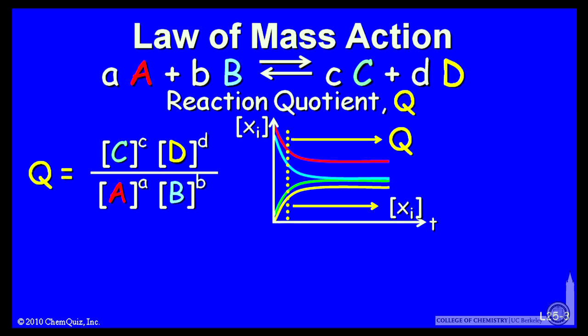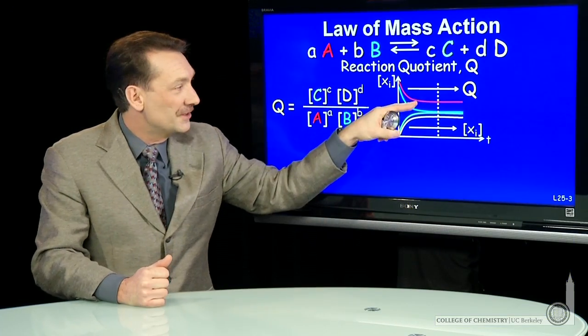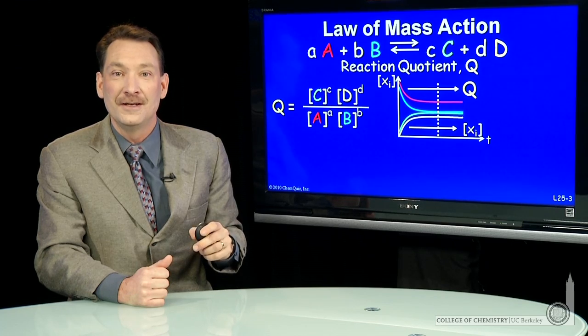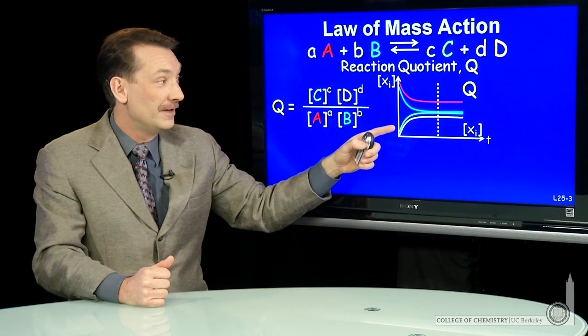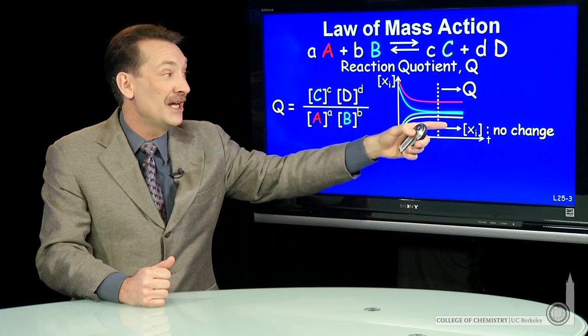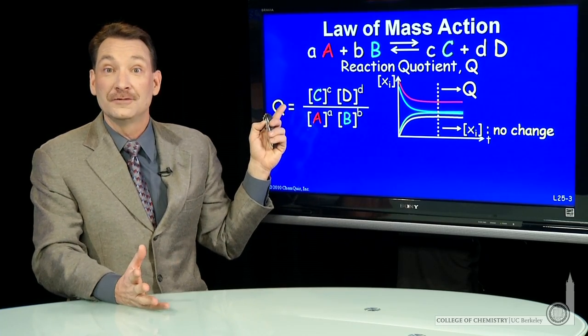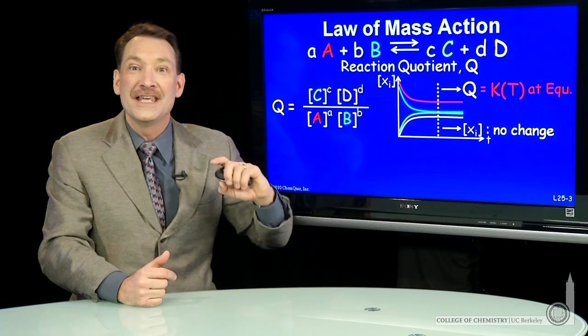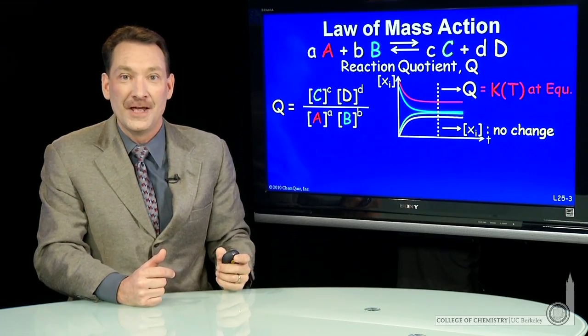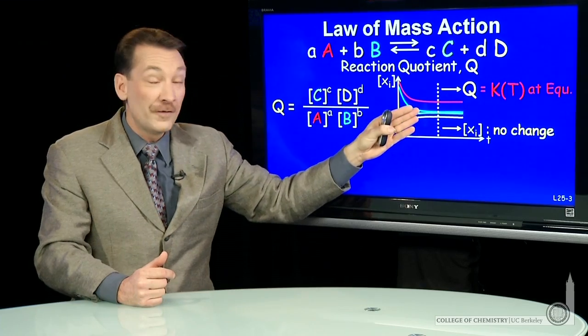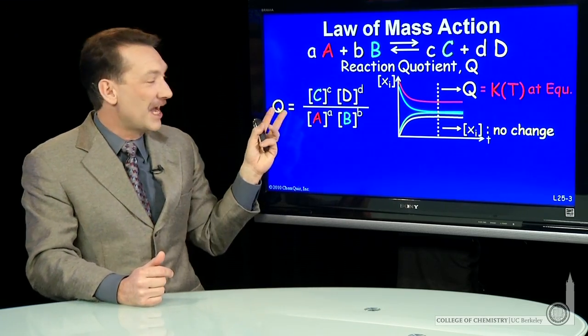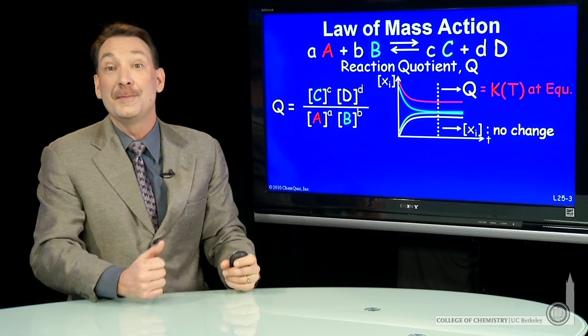But notice, for chemical reactions, the concentrations eventually stop changing. You can see them flatlining here. There's no change with time for the concentrations. So if you wait long enough, these values of concentration stop changing. And that means Q stops changing. It becomes a constant after some time. We call that the equilibrium constant. So as chemical reaction proceeds, over time, the macroscopic concentrations stop changing. And your reaction quotient stops changing. It becomes a constant. We call that the equilibrium constant.